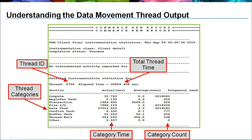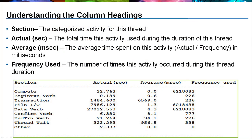This example highlights the various parts of the individual thread output. The thread ID is the identifying number given to the thread by the TSM client. The thread categories are the discrete sub-operations performed to accomplish the data movement — these are the categories that are counted and timed. The category time column is the measured time in seconds for each category. The category count is the number of times each category operation is invoked. The total thread time is the elapsed time for this thread.